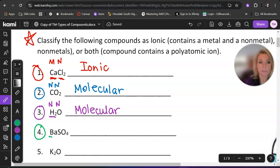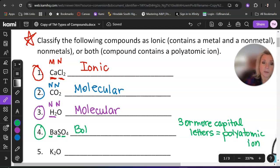And so if you look at this formula, you'll see that it has a capital B, a capital S, and a capital O. If you have three or more capital letters, that means that you have a polyatomic ion. And that means that this is both ionic and molecular.